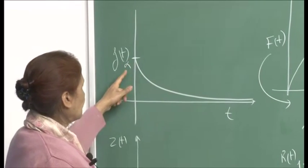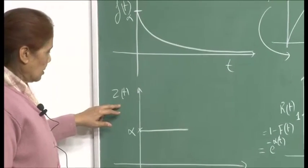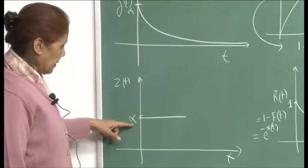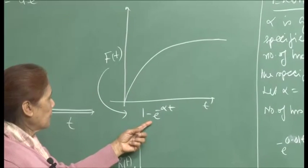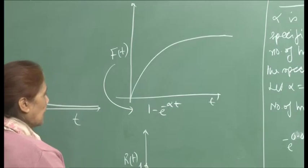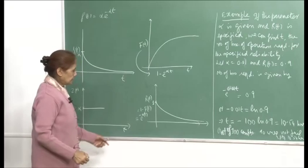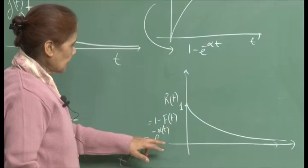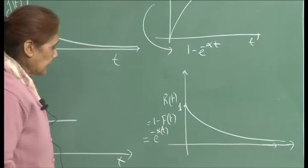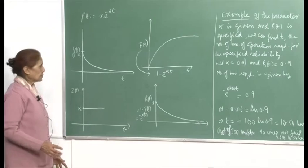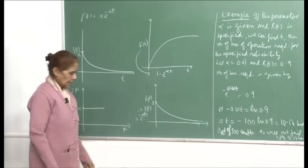This is the graph for the pdf of the exponential failure law — at t equal to 0, it equals α, then goes down to 0. The failure rate z(t), the hazard function, is a constant with value α. The CDF f(t) = 1 minus e^(−αt) starts at 0 and goes up to 1. The reliability function is e^(−αt): starts at 1 and goes down. These are the four functions related to the exponential law.